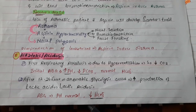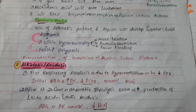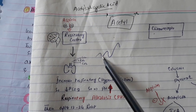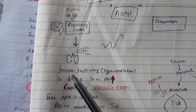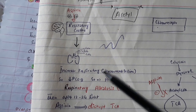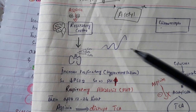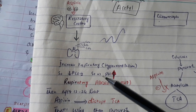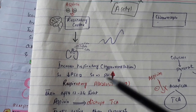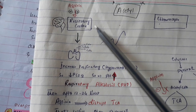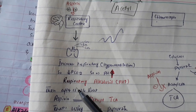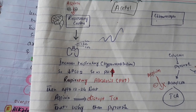Regarding alkalosis and acidosis: first there will be hyperventilation, because aspirin activates the respiratory center in the brain. This leads to hyperventilation, meaning more carbon dioxide is exhaled. Carbon dioxide in the body decreases, pH increases — that is why we call it respiratory alkalosis.